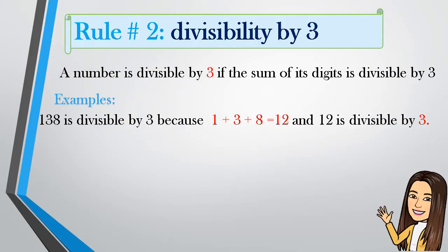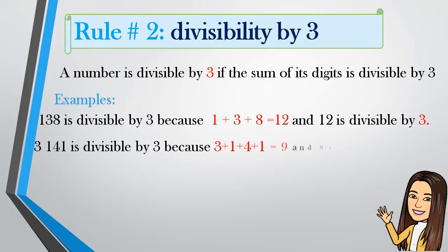Another example: 3141 is divisible by 3. Why? Because 3 plus 1 plus 4 plus 1 equals 9, and 9 is divisible by 3.